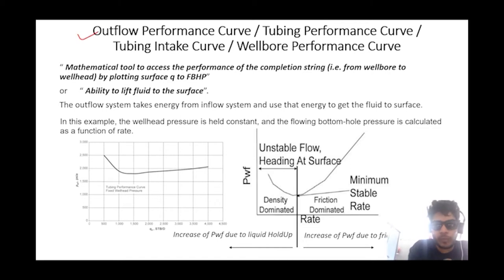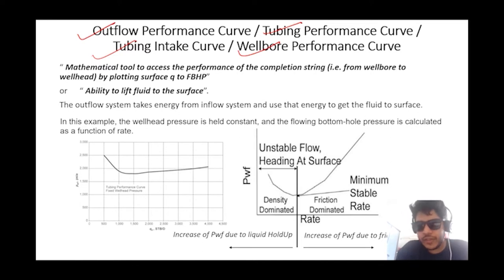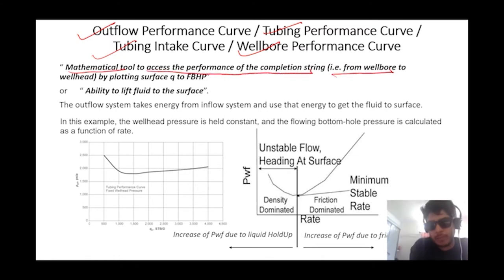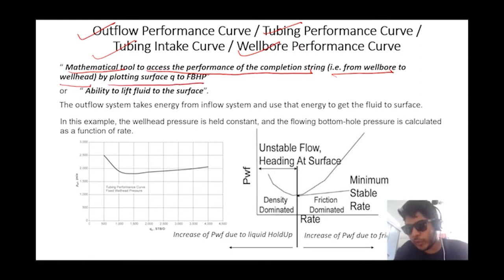Tubing Performance Relationship, also called outflow performance curve, tubing performance curve, tubing intake, or wellbore performance curve — everything is the same. As per the definition, outflow performance relationship is a mathematical tool to assess the performance of the completion string from the wellbore to the wellhead, by plotting surface flow rate against flowing bottom hole pressure.